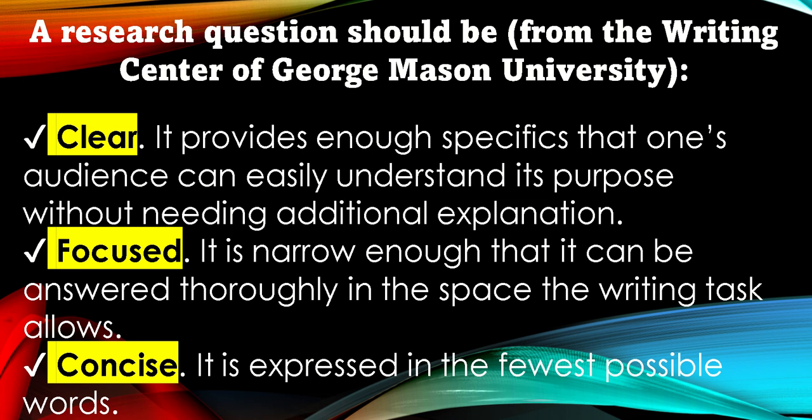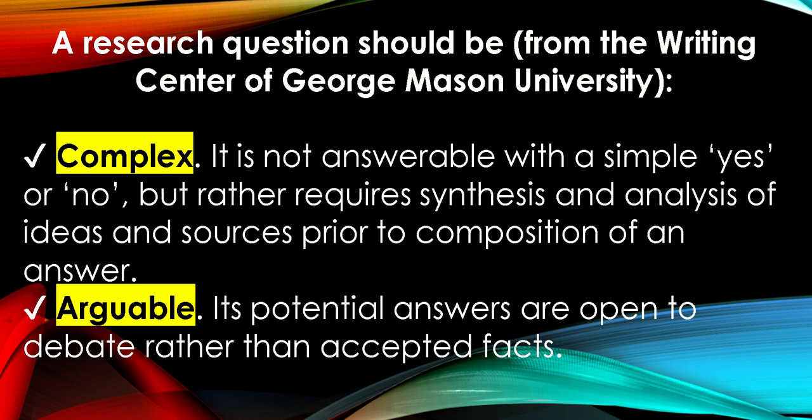According to the Center of George Mason University, a research question should be: Clear — it provides enough specificity that the audience can understand its purpose without additional explanation. Focused — narrow enough to be answered thoroughly within the writing task. Concise — expressed in the fewest possible words. Complex — not answerable by simply yes or no, but requiring synthesis and analysis of ideas and sources. And arguable — its potential answers are open to debate rather than accepted facts.